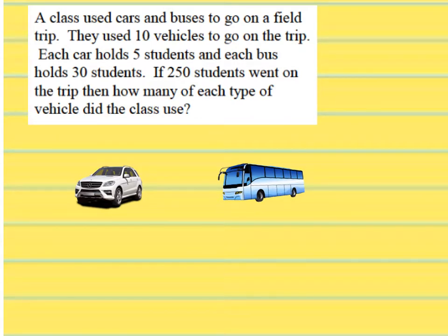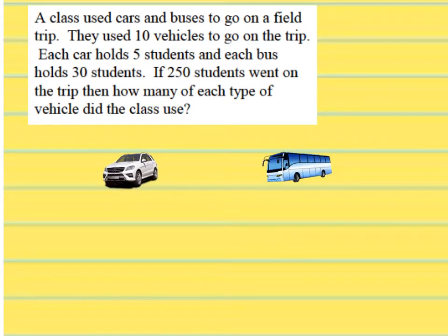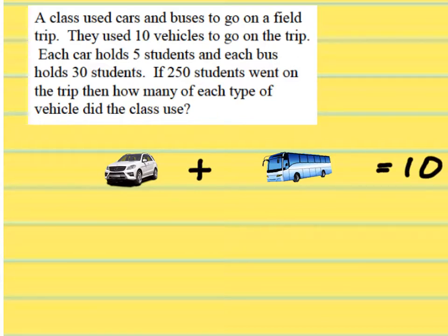A class used cars and buses to go on a field trip. They used 10 vehicles to go on the trip. Each car holds 5 students and each bus holds 30 students. If 250 students went on the trip, then how many of each type of vehicle did the class use? So we know we have cars and we have buses. What can I write for my first equation if they took 10 vehicles? C plus B equals 10.